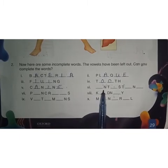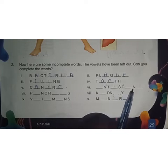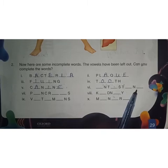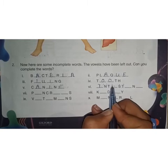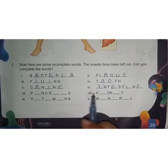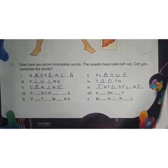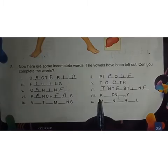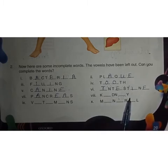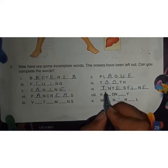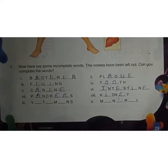Next, sixth: dash-N-T-dash-S-T-dash-N-dash. This is an incomplete word and the answer will be 'intestine', with vowels I, E, I, E. Next, seventh: P-dash-N-C-R-dash-dash-S. The vowels A, E, A complete the word. The answer will be 'pancreas'. Next, eighth: K-dash-D-N-dash-Y. The answer will be K-I-D-N-E-Y — 'kidney'. Kidney is the complete word.